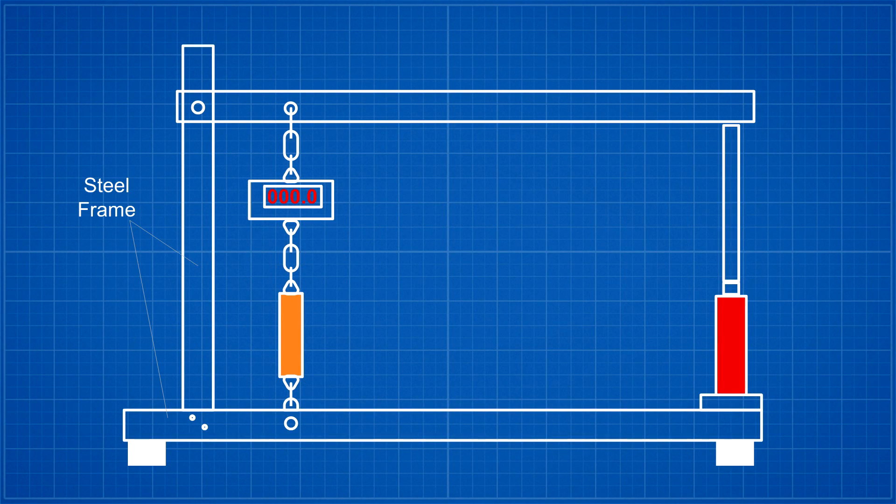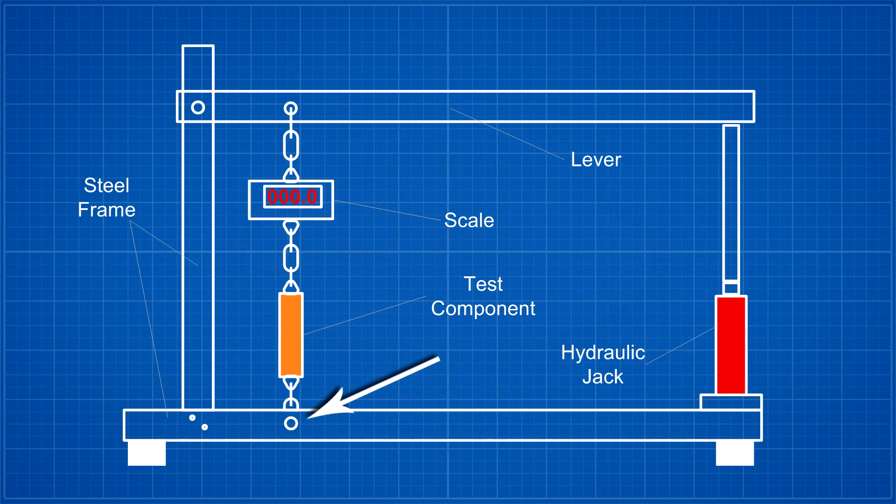The design is based around a steel frame with a lever at the top of it. There is a two-ton hydraulic jack that applies the force at one end of the lever. One end of the component being tested is suspended under a scale that hangs from this lever, and the other end of the component is attached to the frame base. This allows us to directly measure the force applied to the component.